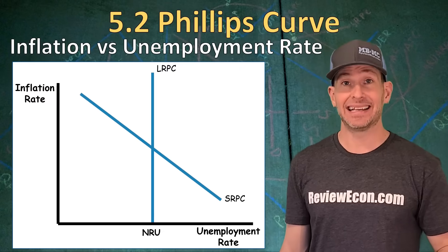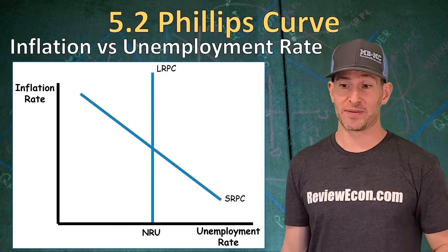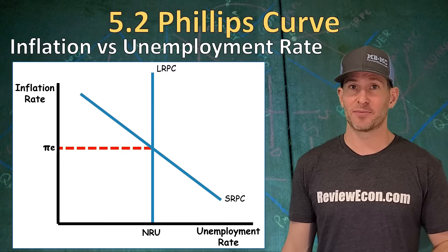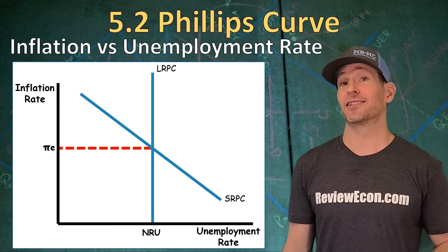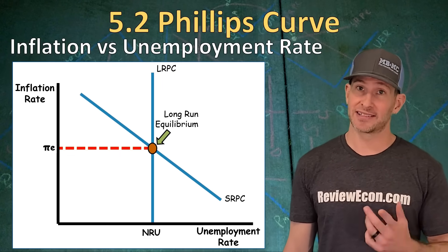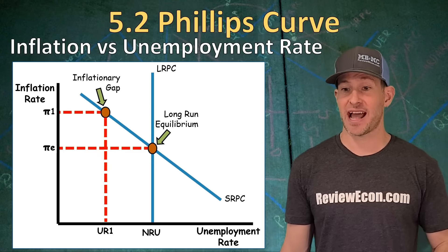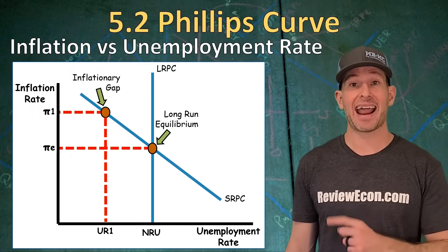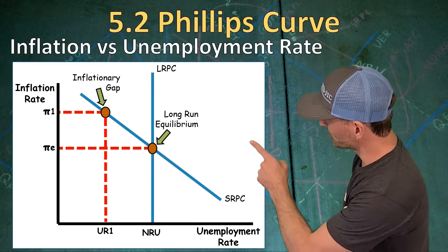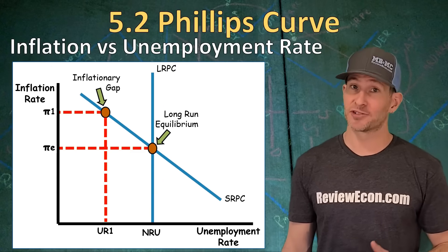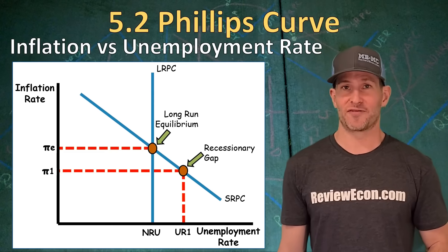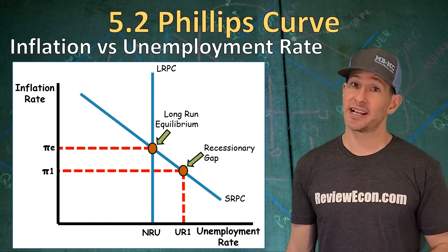Remember, the natural rate of unemployment is frictional unemployment plus structural unemployment. At the intersection between the two curves, we find the expected inflation rate. When the natural rate of unemployment equals the current rate of unemployment, we are at long-run equilibrium. When the current unemployment rate is less than the natural rate of unemployment, we have an inflationary gap — the inflation rate is higher than expected and the unemployment rate is lower than the natural rate. When the unemployment rate is greater than the natural rate of unemployment, we have a recessionary gap — high unemployment and an inflation rate lower than expected.